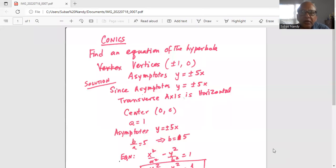Find an equation of the hyperbola. Vertices is plus minus one, zero. Asymptotes is y equal to plus minus five x. Since asymptotes y equal to plus minus five x, transverse axis is horizontal. So center is zero, zero, and a is one.